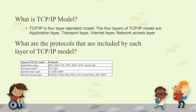What protocols are included at each layer of the TCP/IP model? Application layer: DNS, DHCP, FTP, TFTP, SMTP, HTTP, Telnet, SSH — the application protocols remain the same. Transport layer: TCP and UDP — also the same. Internet layer: IP, ICMP, IGMP. Network Access layer is a combination of both the Data Link layer and Physical layer, so it includes Ethernet, Token Ring, FDDI, Frame Relay, ARP, Reverse ARP, and STP.